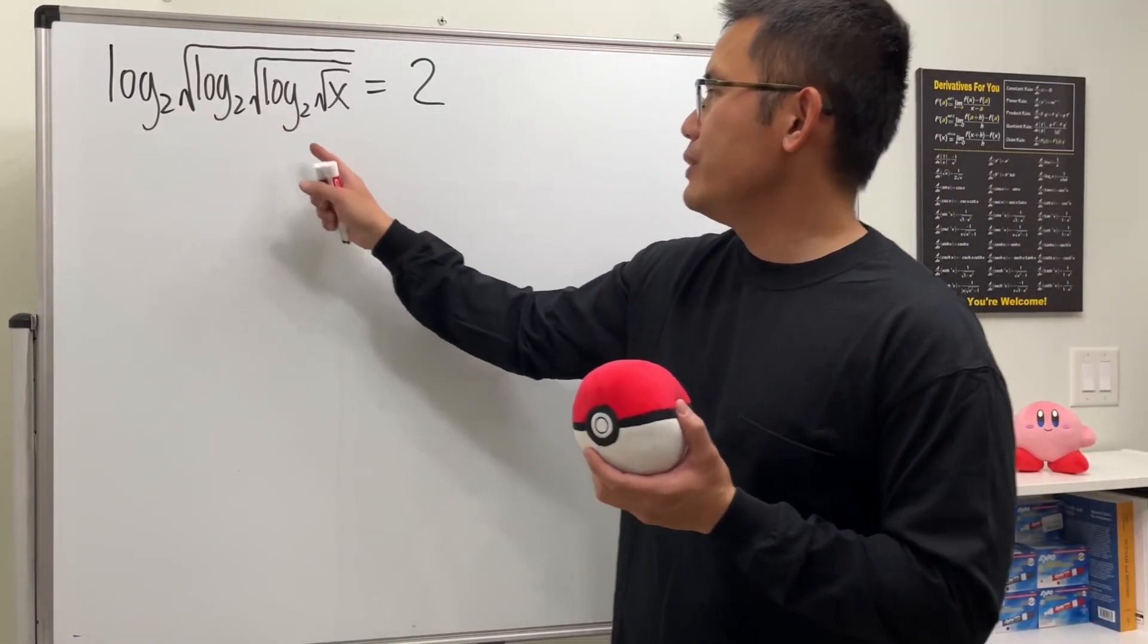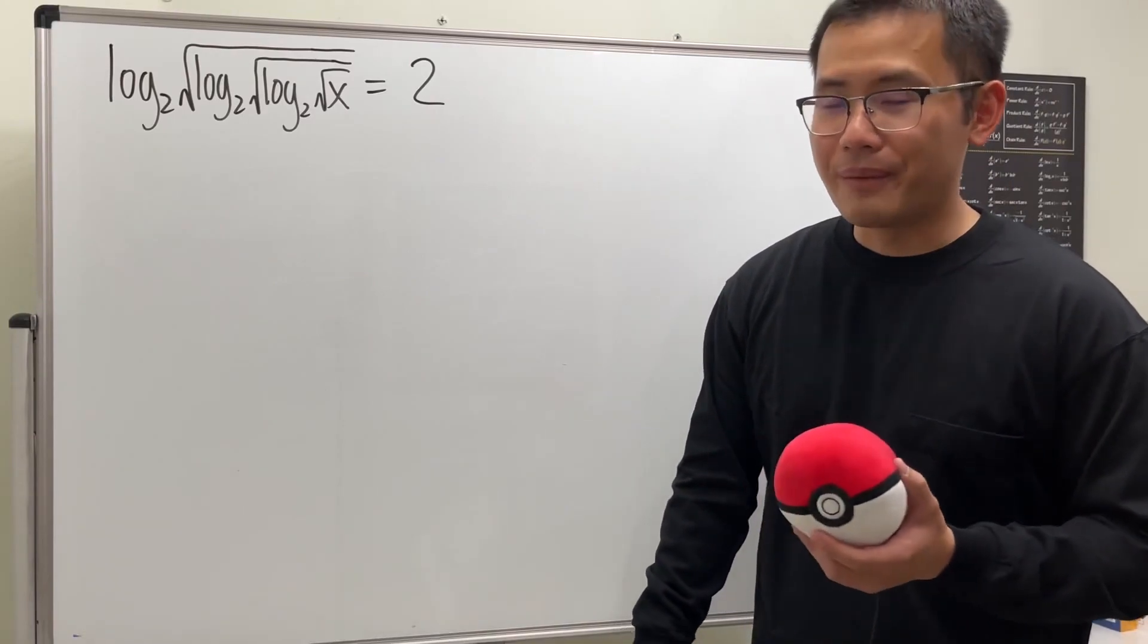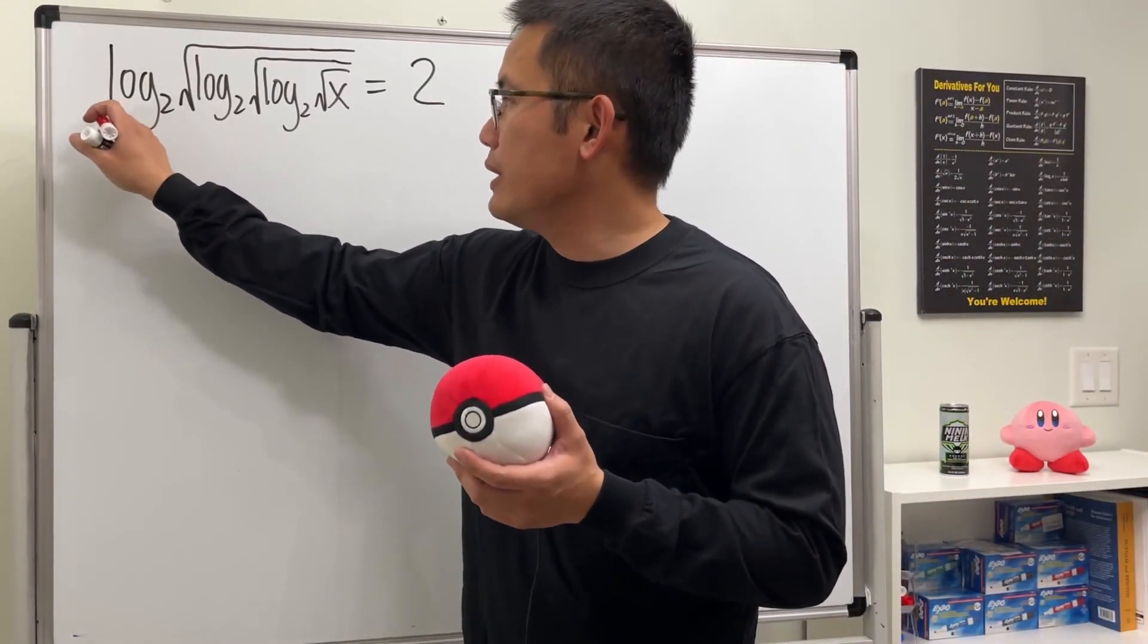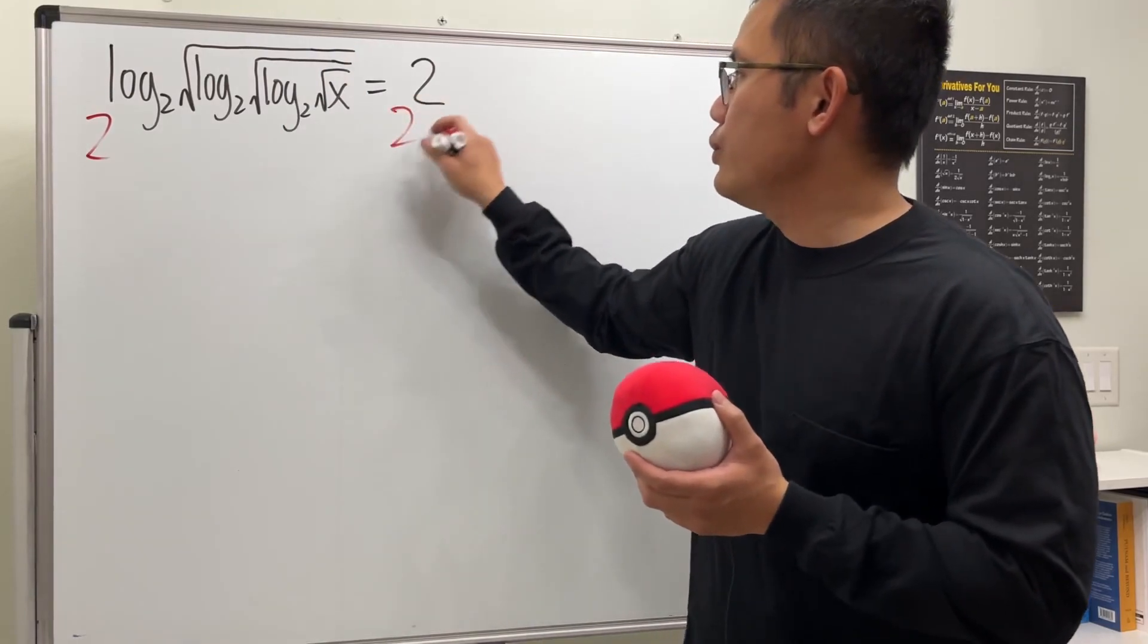We have two, two, two here and also another two here. First off we have to get rid of this log base 2. To do that we do 2 to that power and 2 to that power.